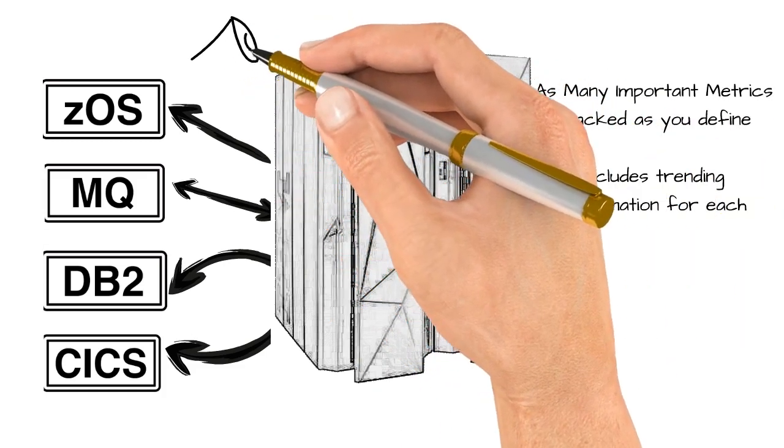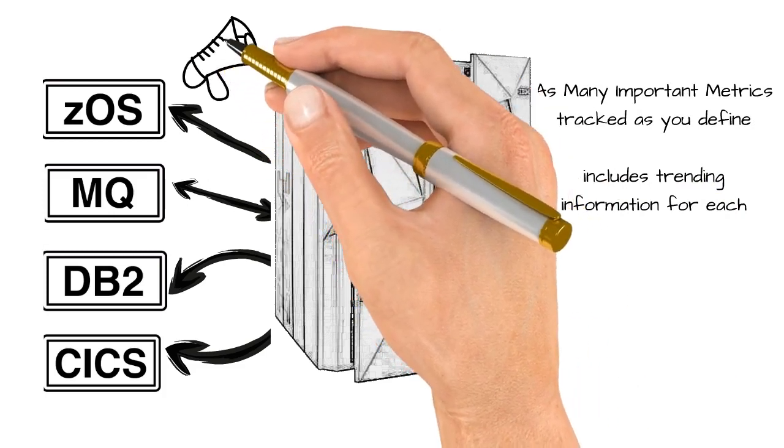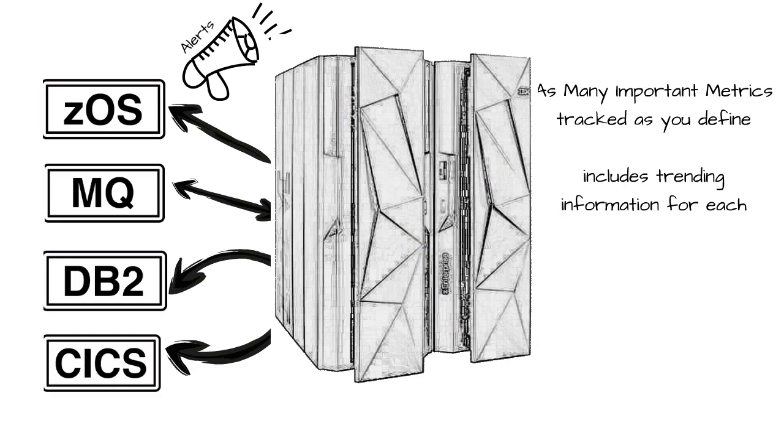And for each monitored parameter, trending information is calculated continually. This means that only real issues are issued as alerts, with false positives nullified by automated analysis.